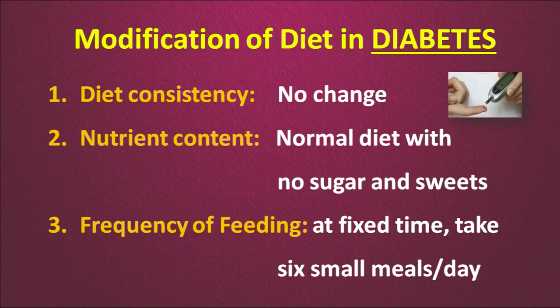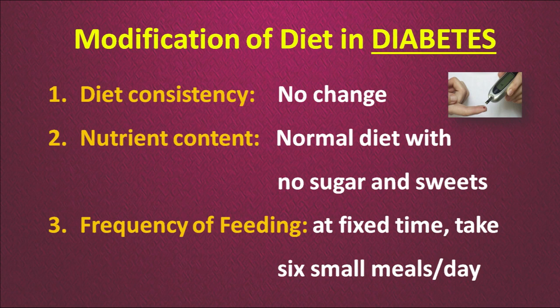Now we will talk about the modification of the diet in case of diabetes. There is no change in diet consistency — you can have normal food — but there is a change in the nutrient content. Normal diet can be eaten but without sugar and sweets. The frequency of feeding is also the same as a normal diet, about 5 to 6 small meals per day, but it is advisable to take all foods at fixed times daily, which will help manage the blood sugar level.